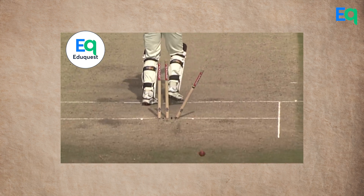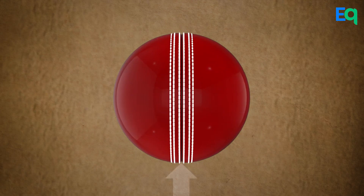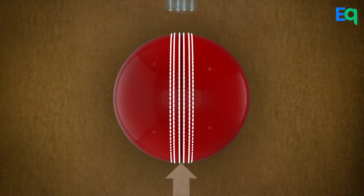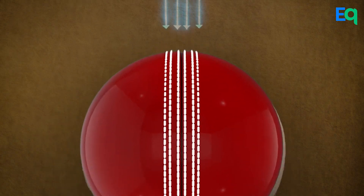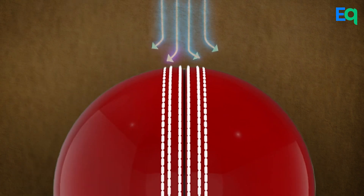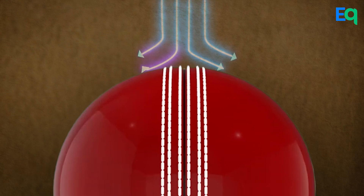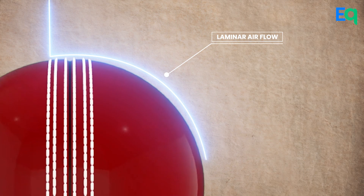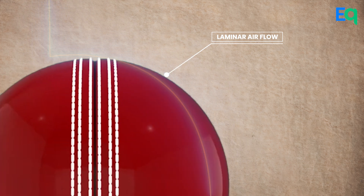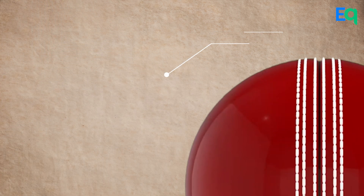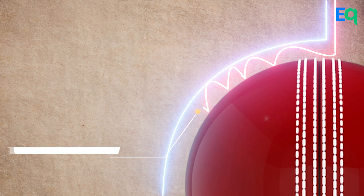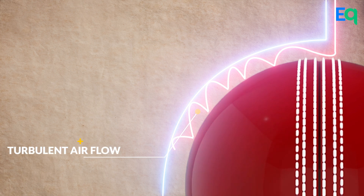Now let's have a look at the science behind the swing. When the ball travels through the air, it divides the air into two parts. The shiny side, being smoother, allows the air to move faster with less friction. The smoother airflow on this side is called laminar airflow. The rough side, on the other hand, due to greater friction, causes the air to move slower and in a more turbulent way. This is called turbulent airflow.